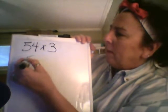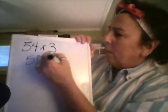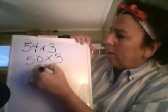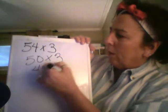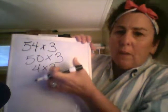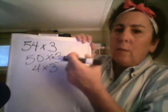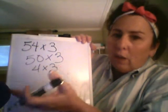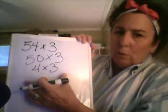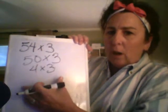What it really means is 50 times 3 and 4 times 3. You could actually break up the 50 also into 10 times 5 if you needed to, but the most important part is to be able to break that number apart.